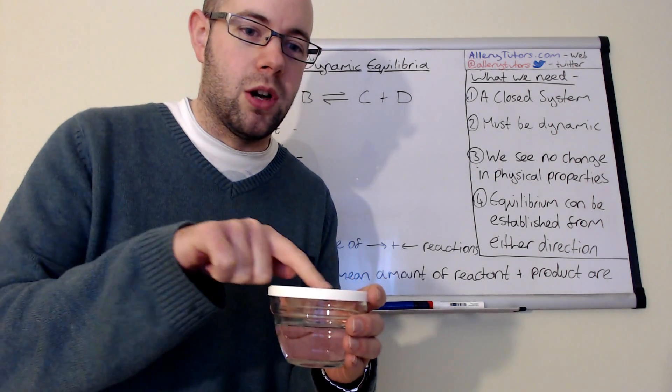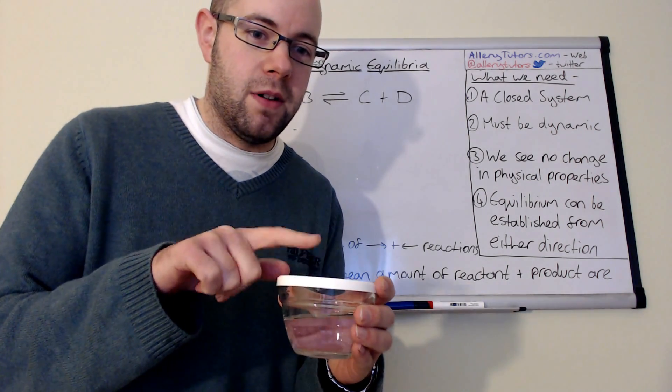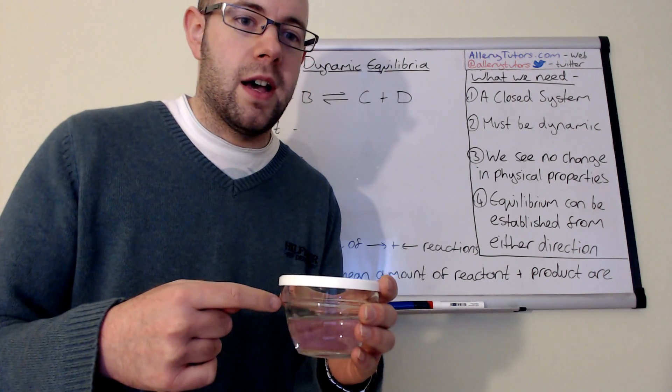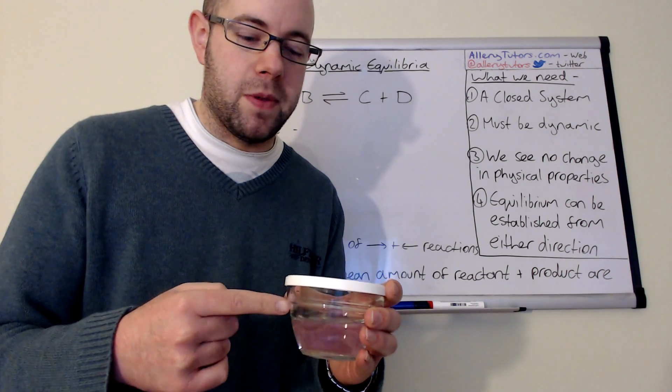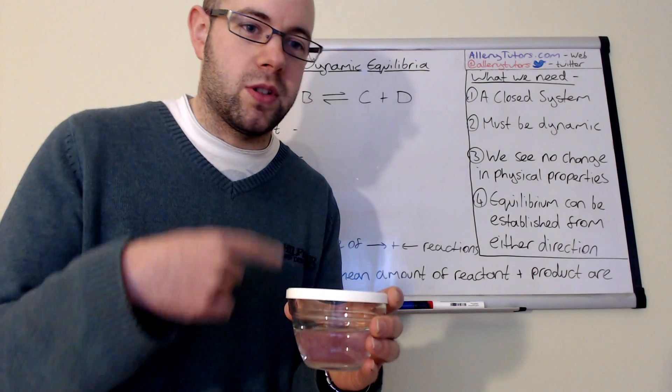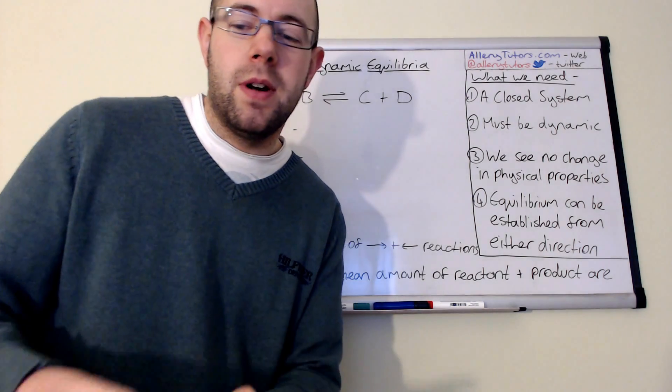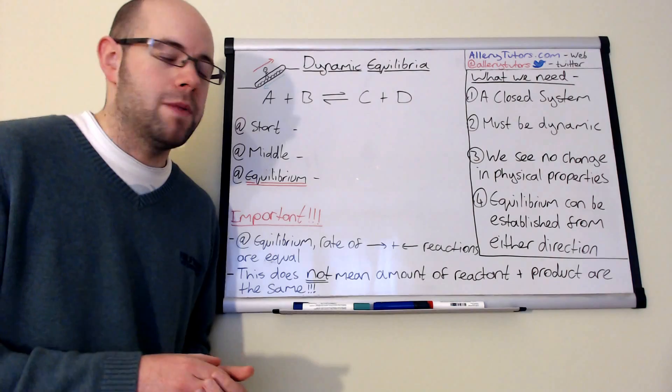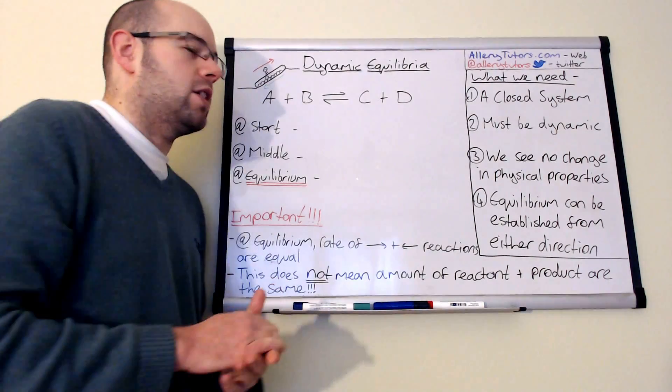We call this a closed system because you can see we've got a lid on the top of it and no reactants or products can actually escape from this container here. So it's all contained in one place. That's crucial when we're describing dynamic equilibrium. What we need is a closed system.